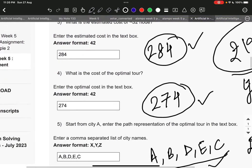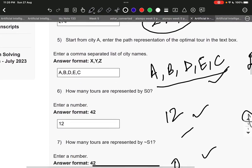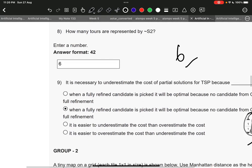Question 4 is 274, question 5 is A, B, D, E, C. Next 12, next 0, next 6.